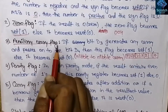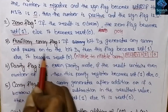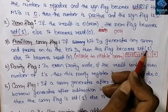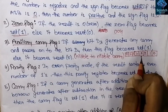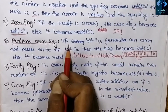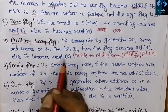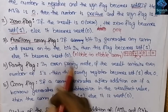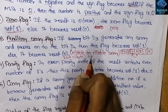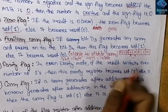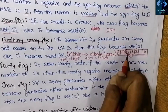For the auxiliary carry flag: after any operation, if bit D3 generates a carry and passes it on to bit D4, then this flag becomes set to 1. If there is no carry shifting from bit D3 to D4, the auxiliary carry flag is reset to 0. This is known as the nibble-to-nibble carry — since 8 bits equals 1 byte and 4 bits equals 1 nibble, the carry shifts from one nibble to another nibble.